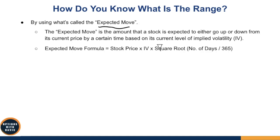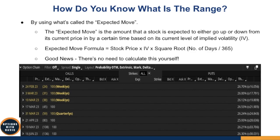The expected move is basically the amount that a stock is expected to either go up or down from its current price by a certain time, based on its current level of implied volatility. For those mathematicians who like to see the formula, it is: stock price times the implied volatility times the square root of the number of days divided by 365. The good news is there is no need for you to calculate this yourself, because if you open up the option trading platform, there are two platforms — TD Ameritrade's thinkorswim and the tastytrade platform — that will show you this expected move. When you open up your option chain, you will see at the right-hand side of the option expiration dates how the implied volatility translates into the expected move.